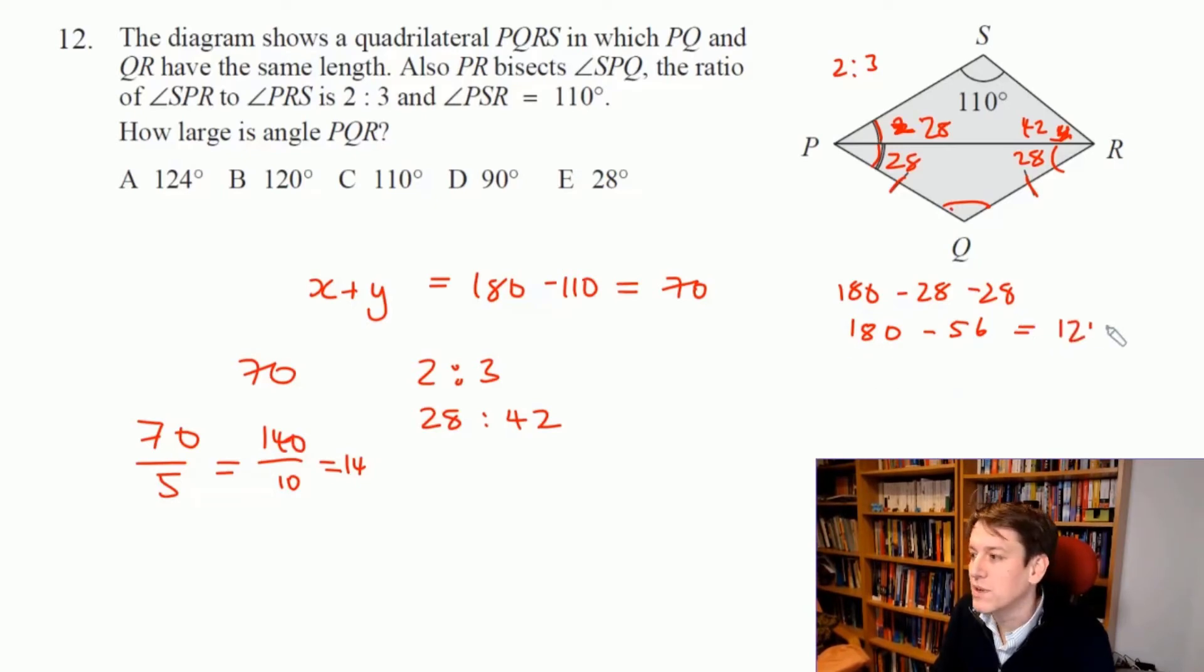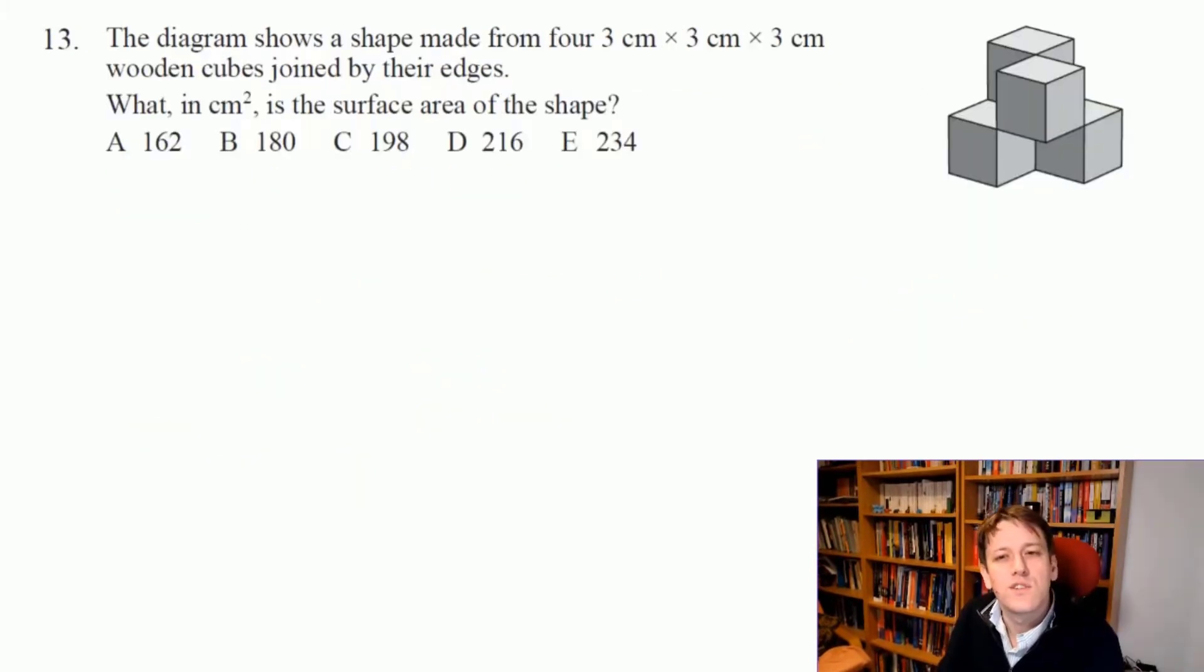Each individual face of the cube here is just a 3 by 3 square, so has an area of 9 cm². What this question is really about is working out the surface area of this whole shape.